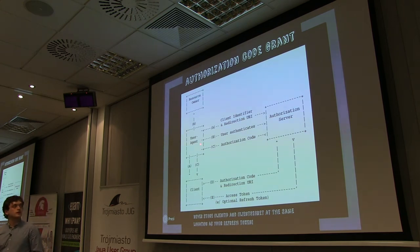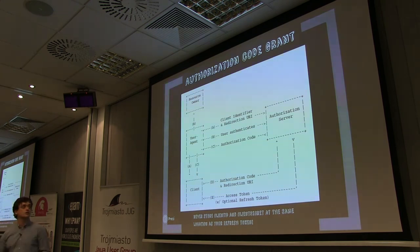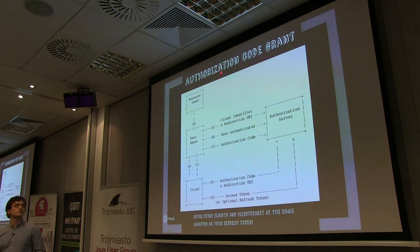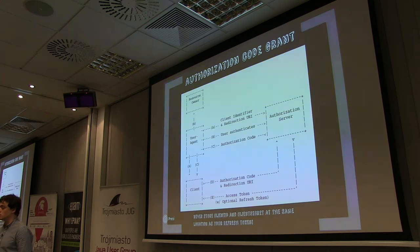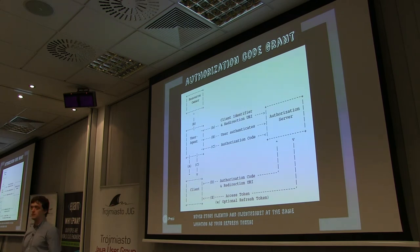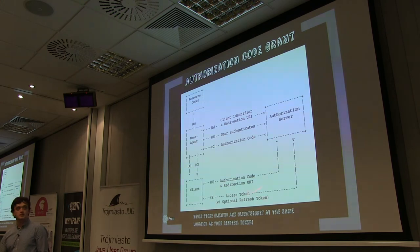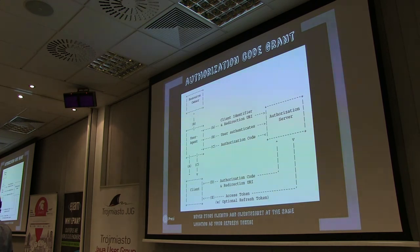In this flow, the access token — which allows the client to perform actions on behalf of the user — is not shared with the user agent or even the resource owner himself. This is more secure because there are fewer chances the resource owner will lose the token. If you give tokens to users, they're likely to misplace them and get hacked.